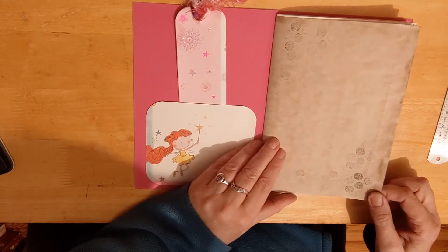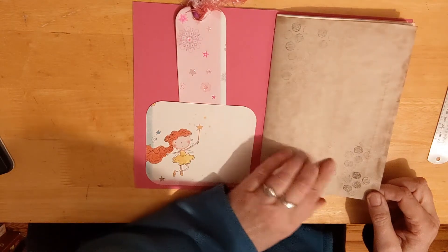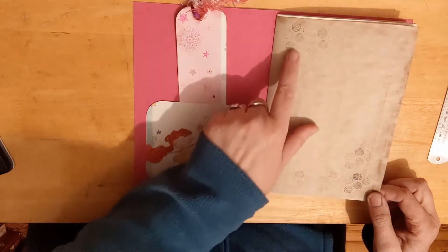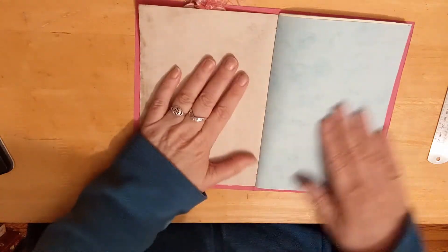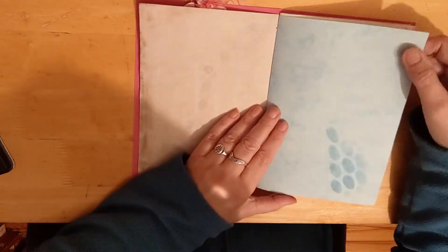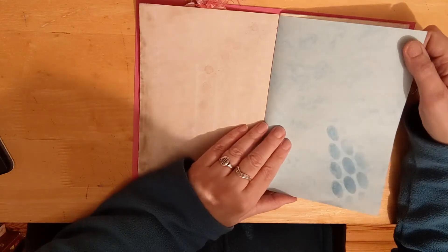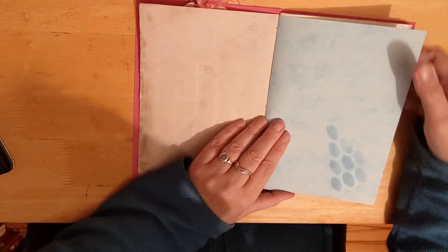Then this is a tea stained page with little stencils on the corners, and this is just ordinary marbled paper that I had in stock. I've had it so long, I don't know where I got it. I did a little bit of stenciling here as well.